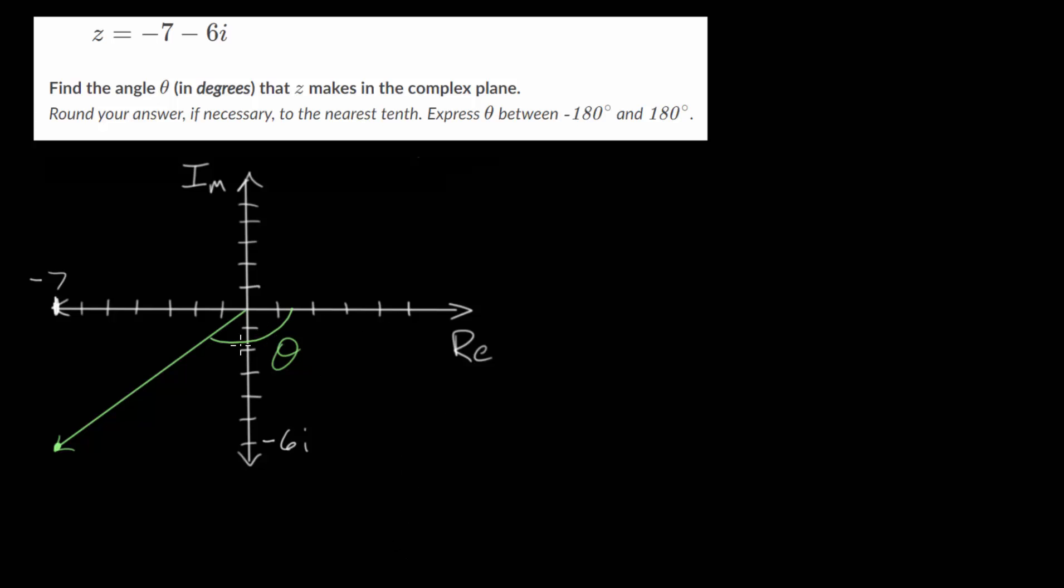To figure out what this angle theta is, we can construct a right triangle here, where we draw a vertical line that is perpendicular to the real axis and a horizontal line that's parallel to the real axis.